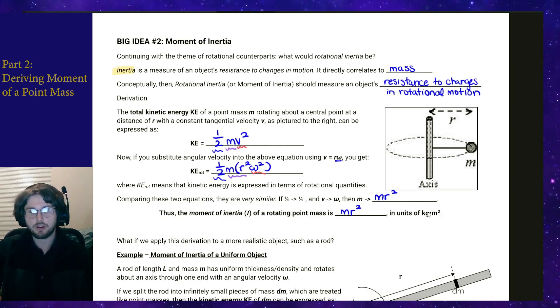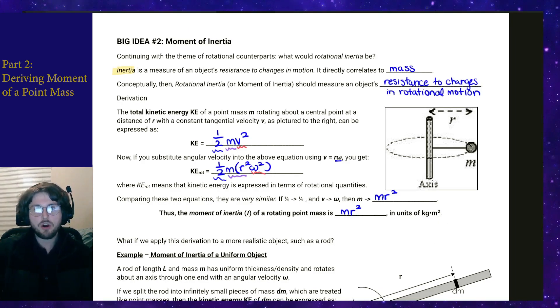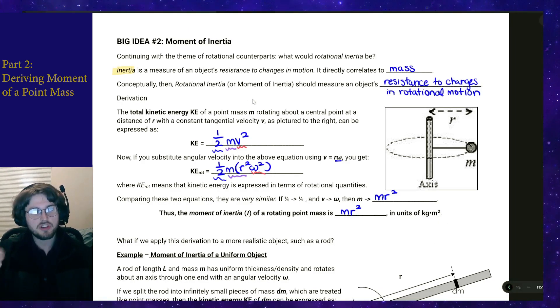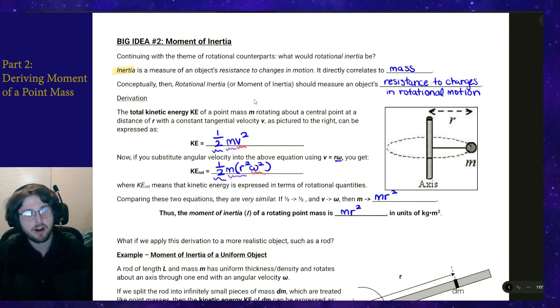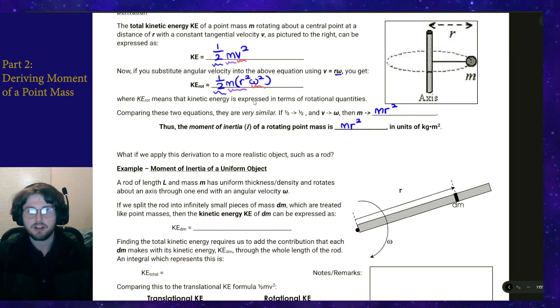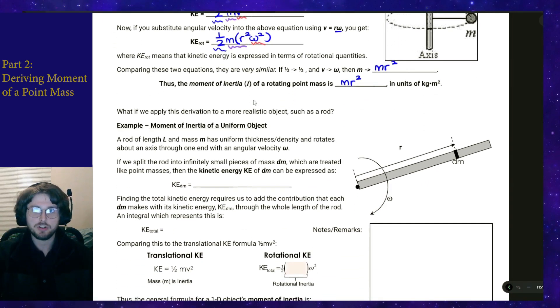The moment of inertia of a rotating point mass is M R squared, and that's in units of kilogram meters squared. That's all well and good, but that's a fairly simple situation — it's not something you're going to see very often, especially in the real world.